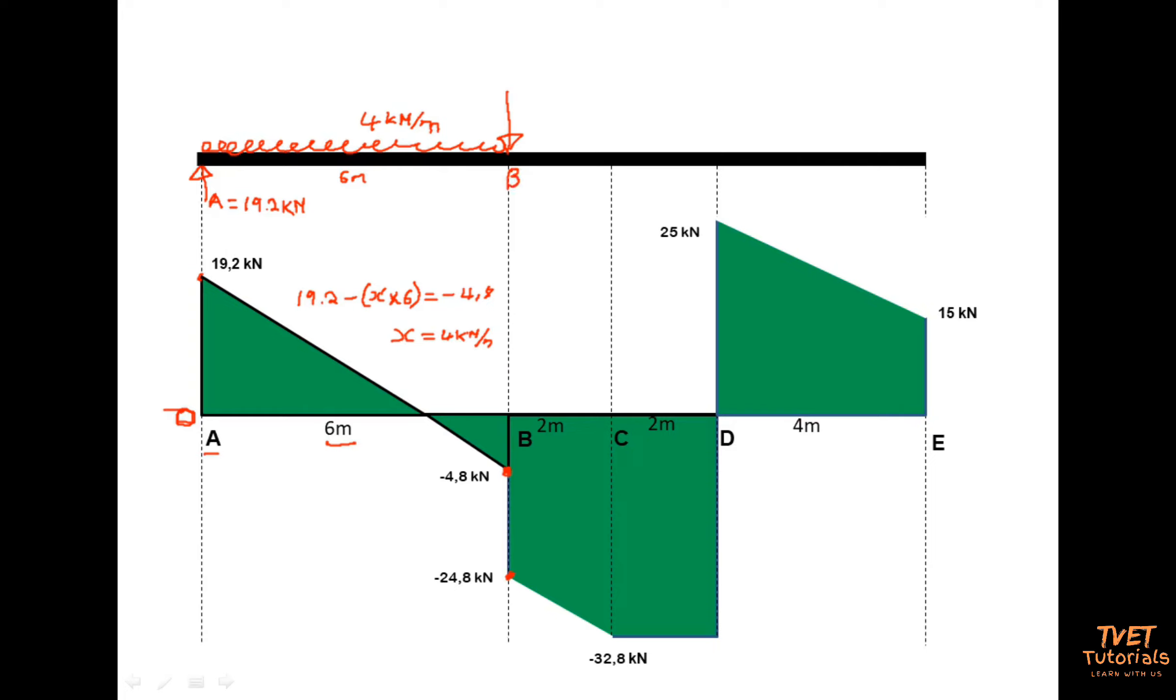So the point load takes me from 4.8 to negative 24. So initially when it was calculated they said negative 4.8 minus the point load I can call it x equals negative 24.8. So I move this negative 4.8 to the other side. It will become positive. When I subtract it I will get negative x is equals to negative 20. Therefore x is equals to 20.